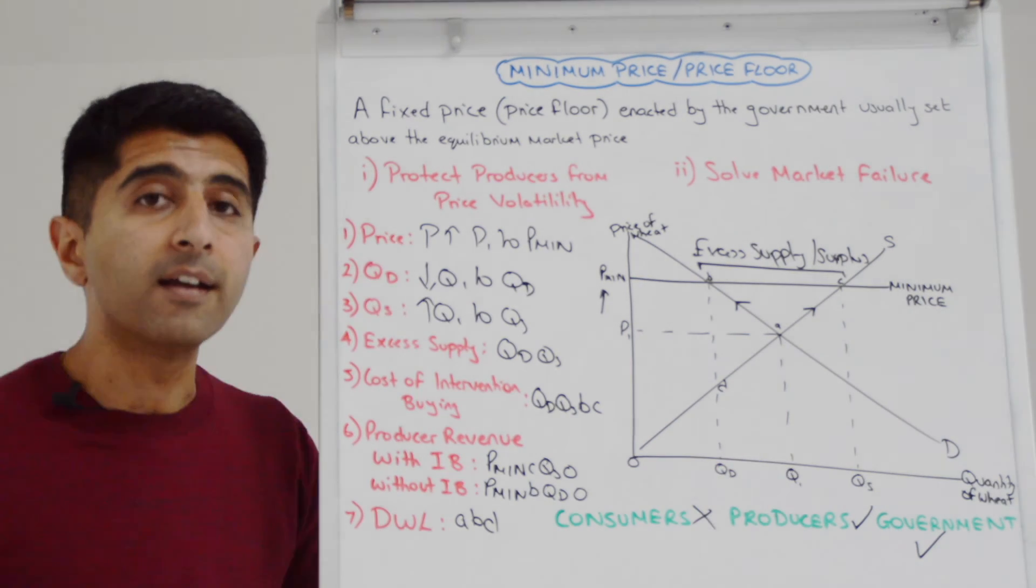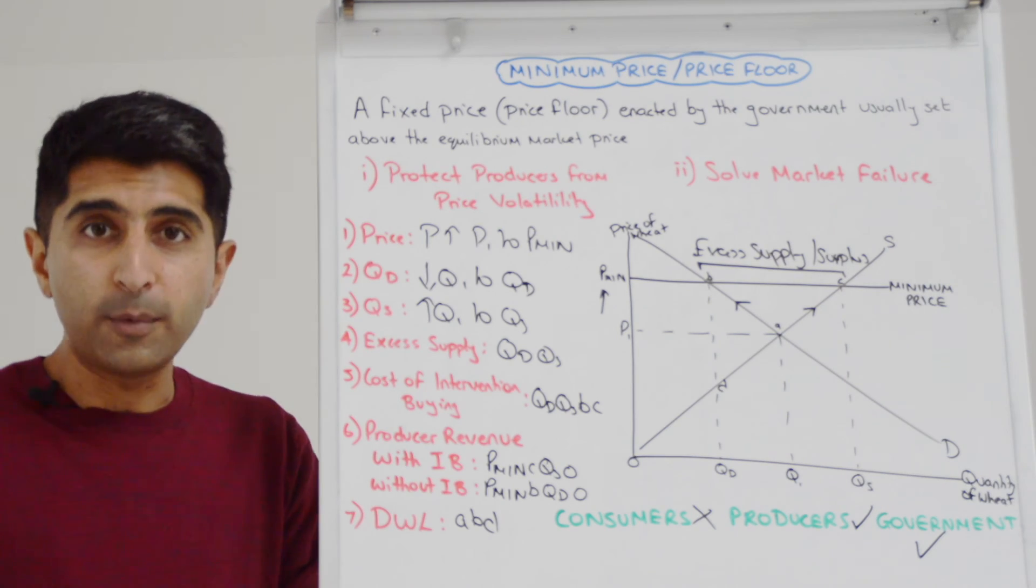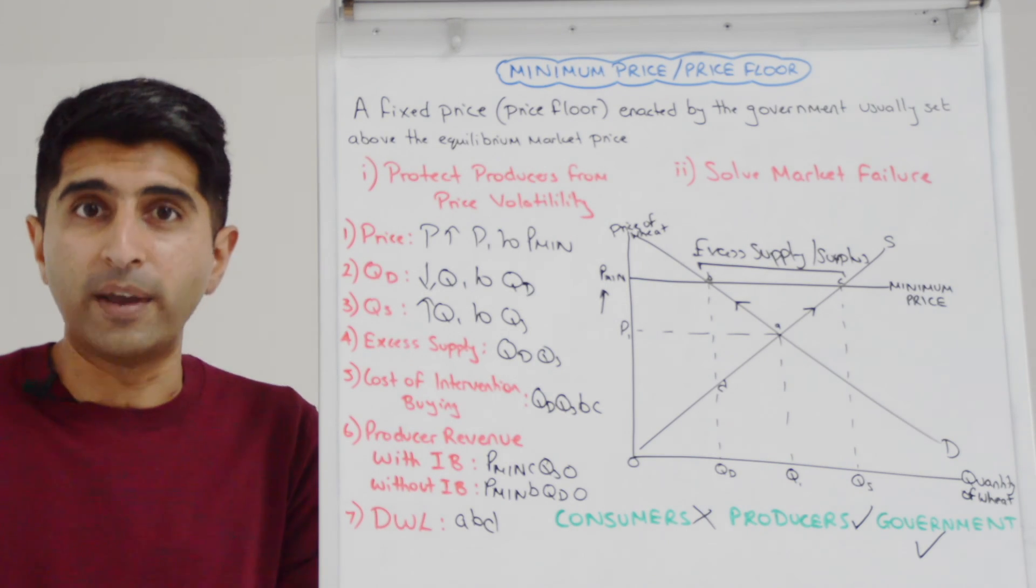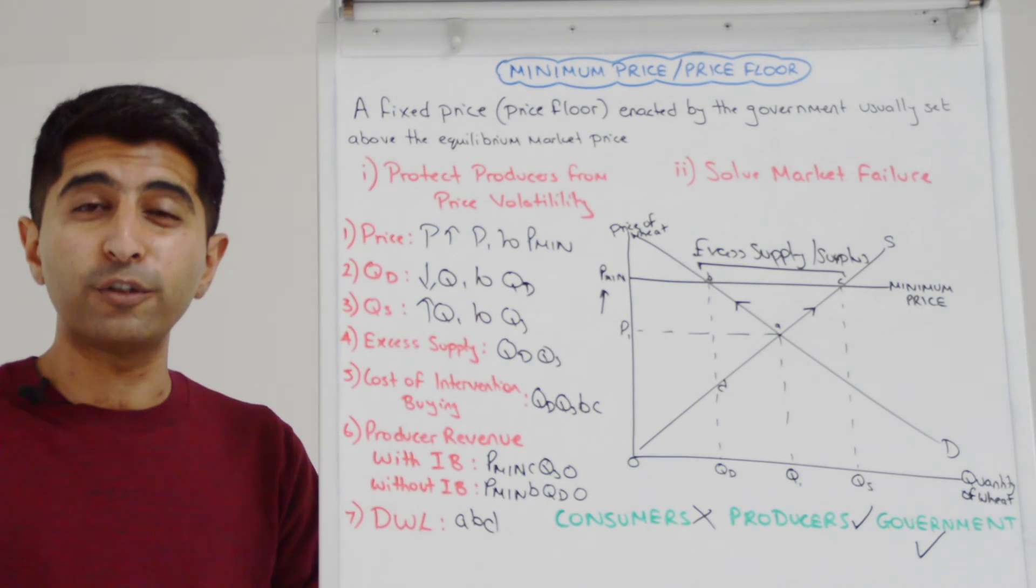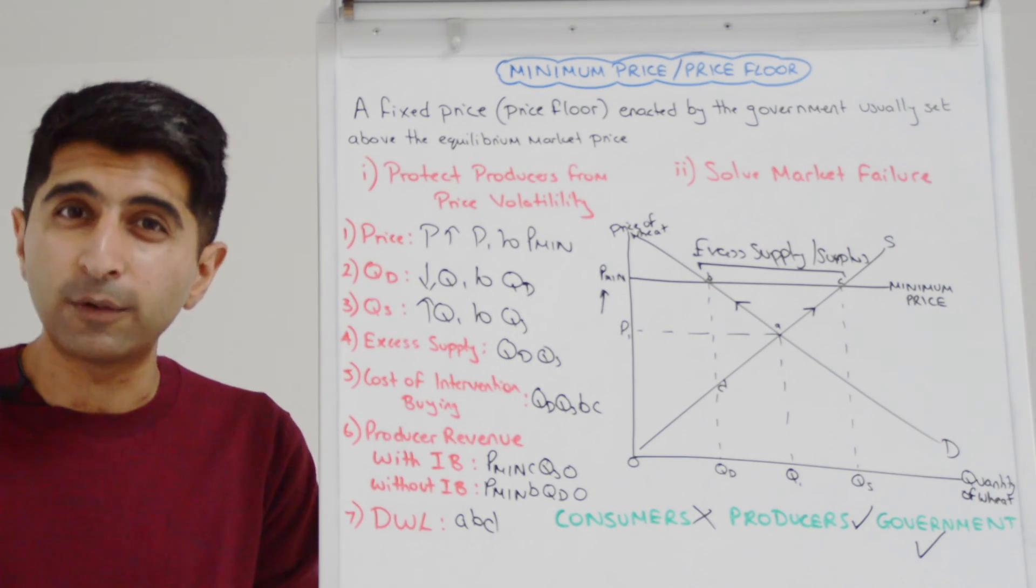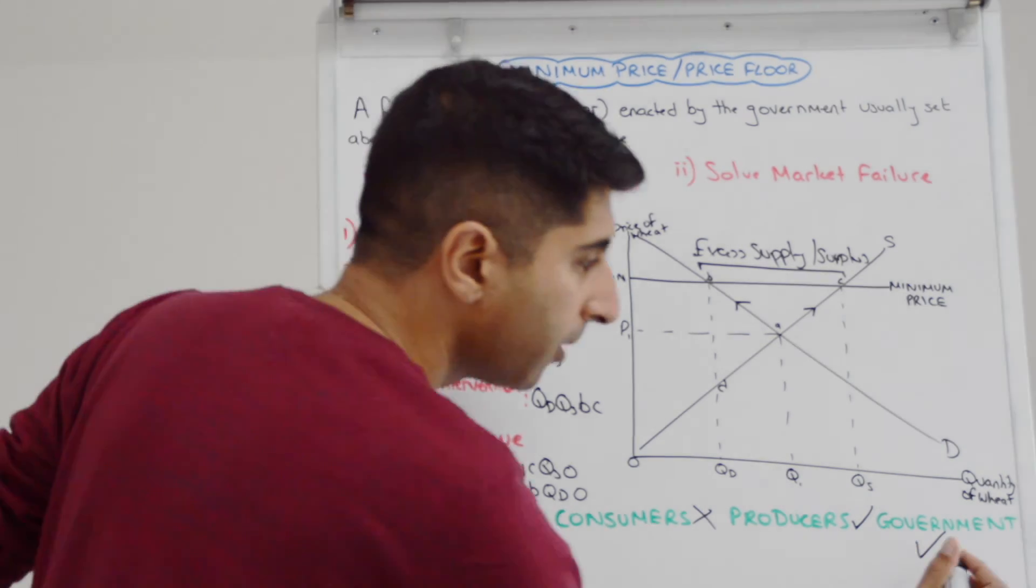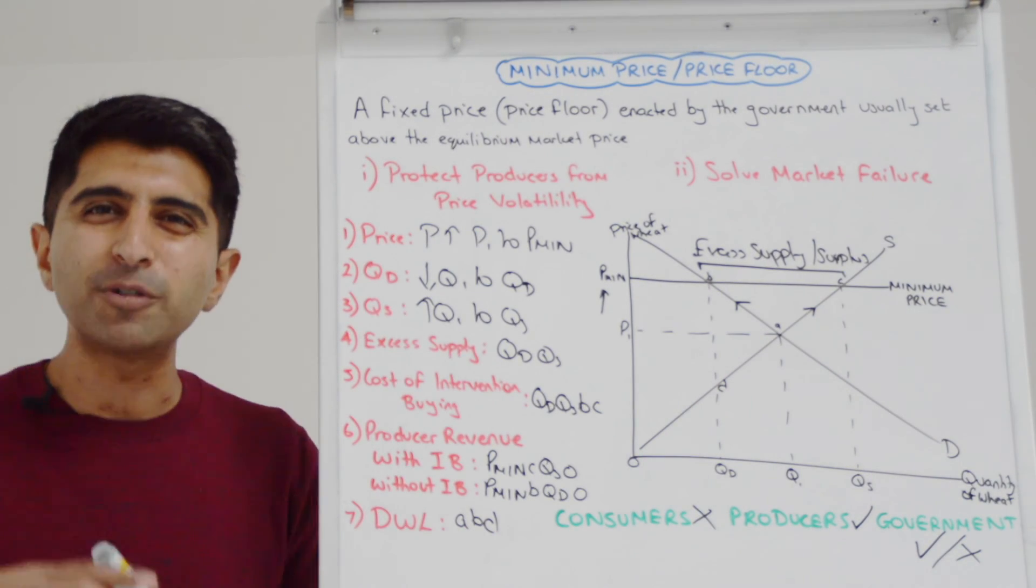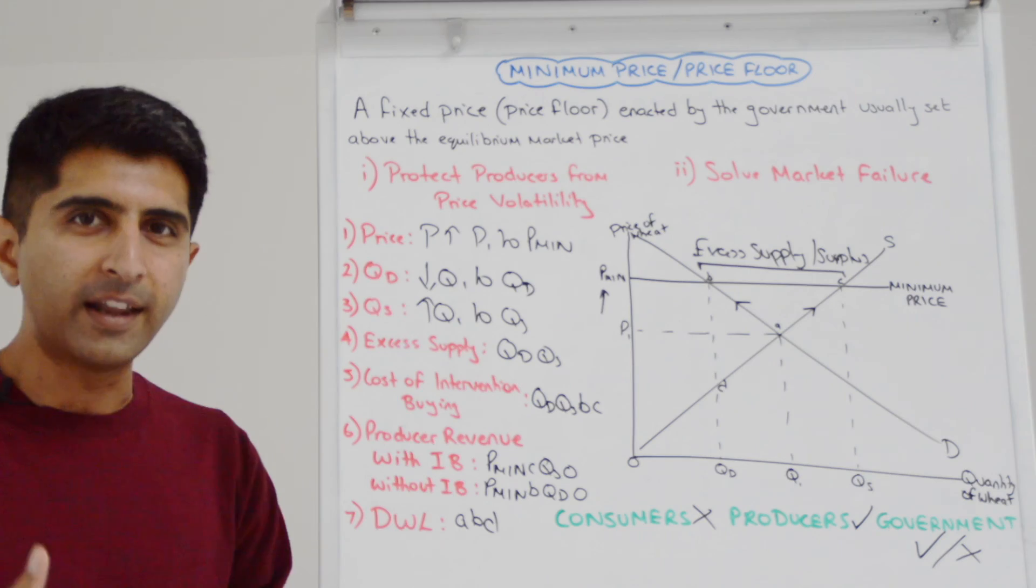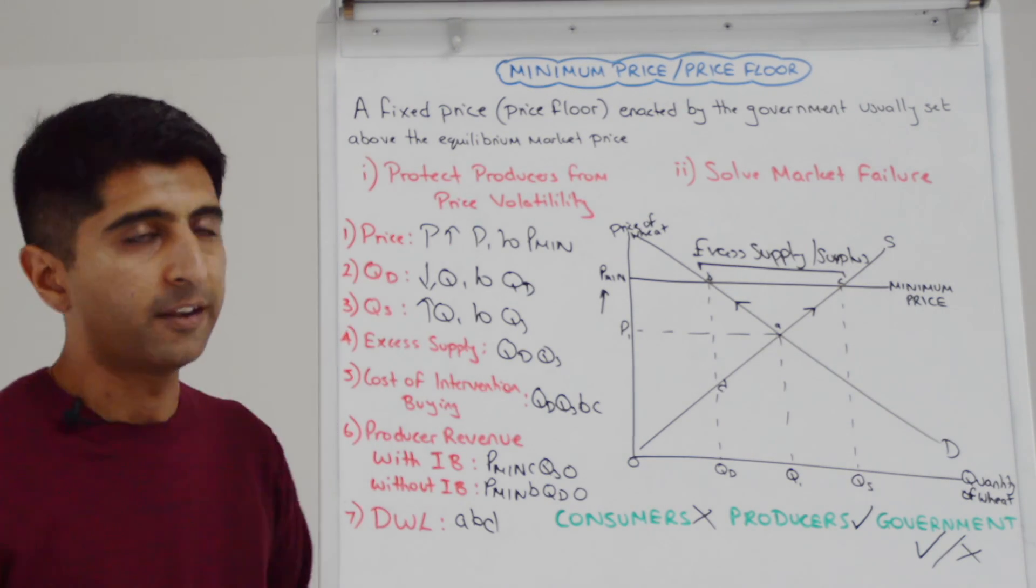But also they are bearing that excess supply. What are they going to do with it? Are they going to store it? Well, that's costly. Are they going to destroy it? What a waste of resources and cost there. Maybe they dump it at a price below cost of production overseas, which they're not really allowed to do. That will create international relations issues. So they've got that problem as well, as well as bear in mind, creating a deadweight welfare loss. So the governments have to be very mindful of all of those unintended impacts before they're going to be fully happy with a minimum price.